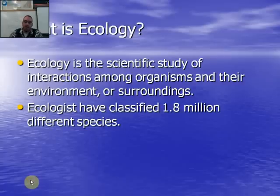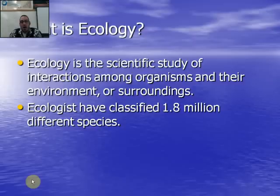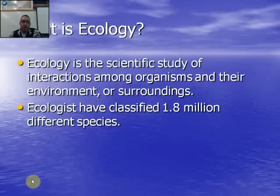Ecologists and biologists have identified about 1.8 million different species on this planet, given them a binomial nomenclature scientific name, and run them through our taxonomy — which we covered in classification last unit. There are many more to go. In fact, professors at Cambridge and Oxford are now posing questions about what ecosystems on other planets might look like and how that will change our definition of life.